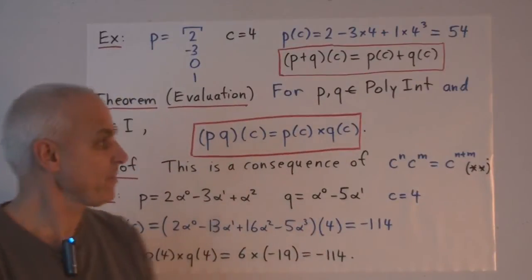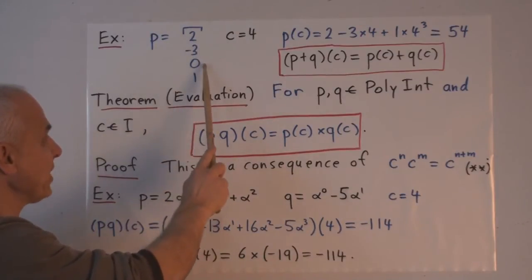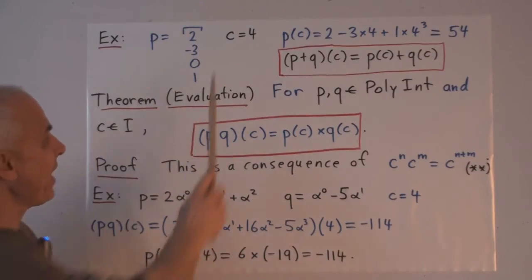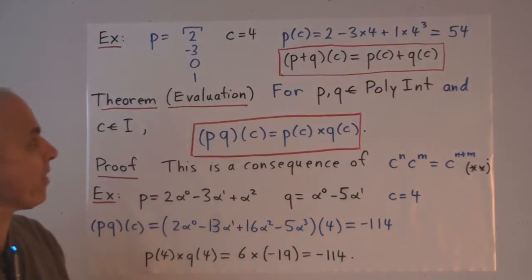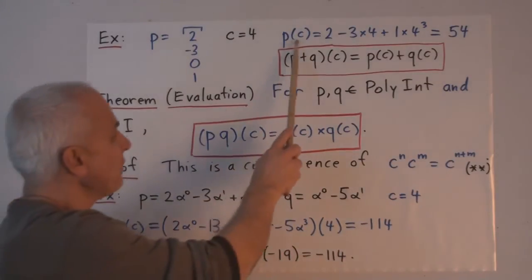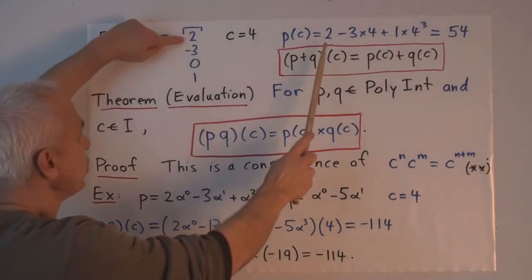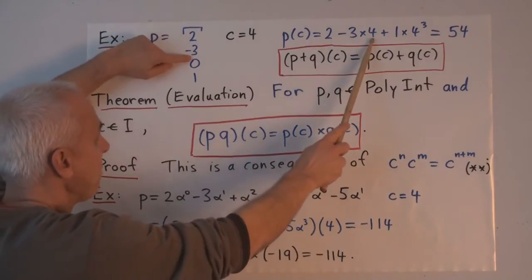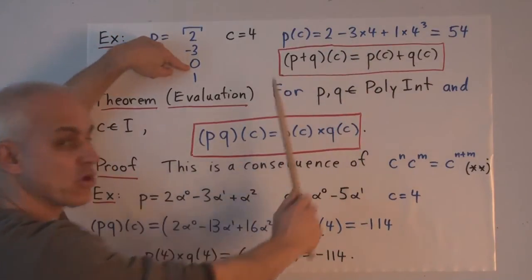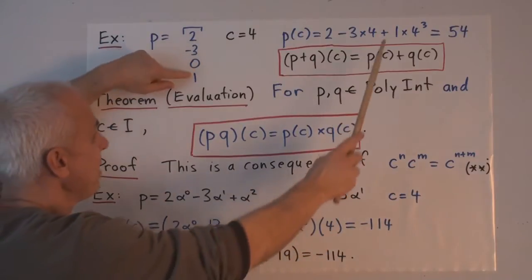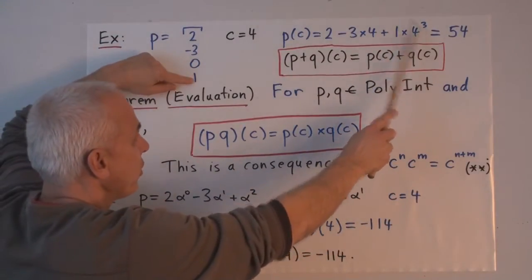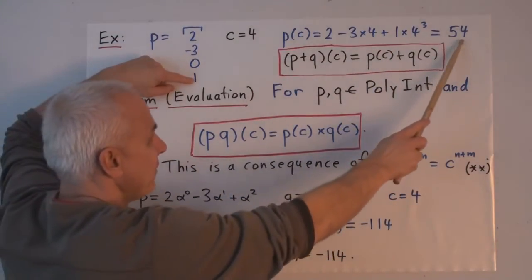So for example, if P is the poly number two minus three, zero, one, and C is the integer four, then P of C is two minus three times four, plus zero times four squared, which I don't write, plus one times four cubed. Altogether, 54.